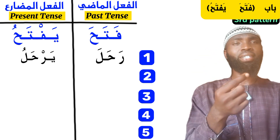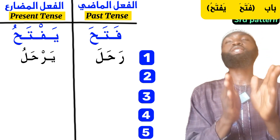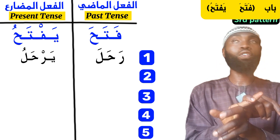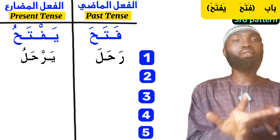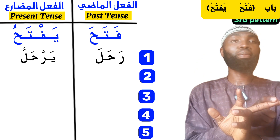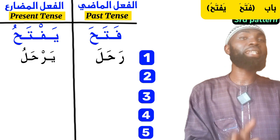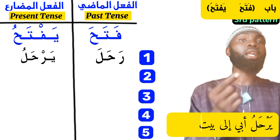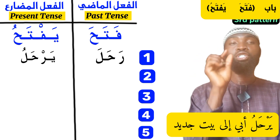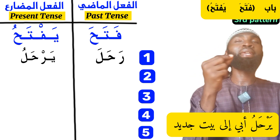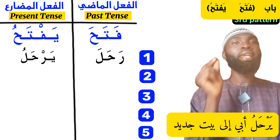An example sentence: yarohalu abi ila bayitin jadid — 'My father is traveling to a new house.' The second word for an example today is the word bahatha. Bahatha means 'he searched,' to search for something or somebody. The present tense will be yabhathu. An example: yabhathu tuflu an makannikhtifai asdiqa'ih — 'The baby is searching for the place where his friends have hidden themselves.'